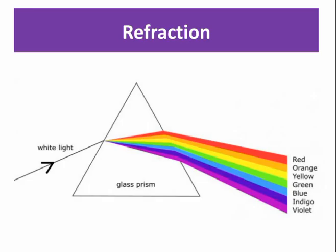Splitting of white light into seven colors by a prism, the formation of a rainbow in the sky, and converging and diverging of light rays by the lens also happen because of refraction.